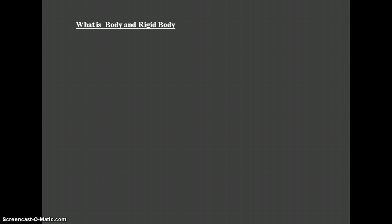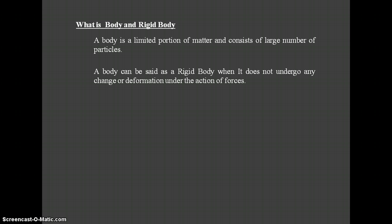Next we discuss Body and Rigid Body — their definitions. A body is a limited portion of matter and consists of a large number of particles. A body consists of an infinite number of particles inside it. We can also define it as matter which can be separated from the space — that is called a body.